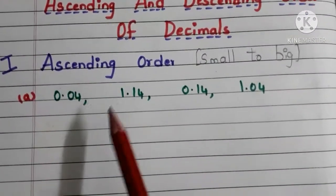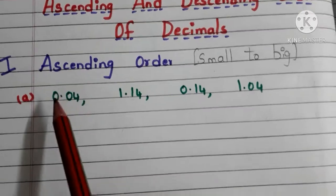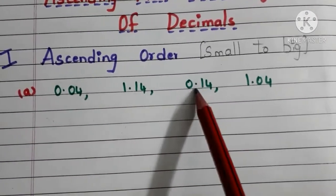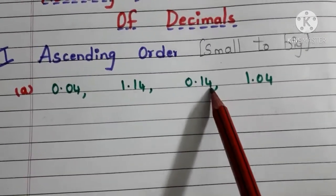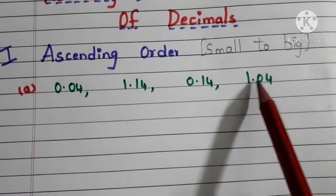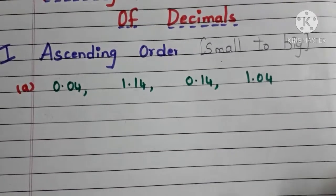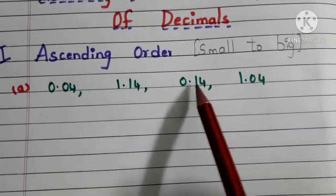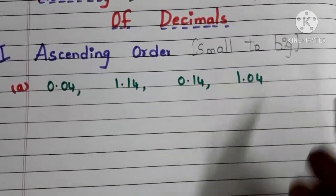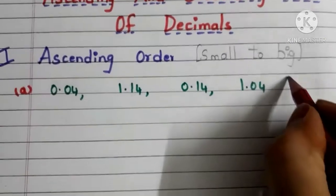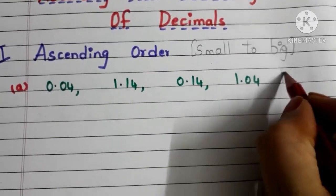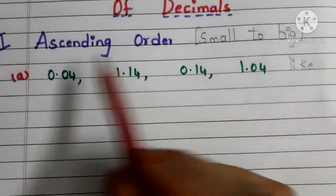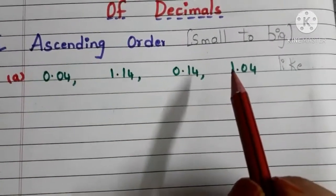Here our first example is 0.04, 1.14, 0.14, and 1.04. By observing these decimals we can easily say that these are like decimals. Now we have to find which one is the smaller one.